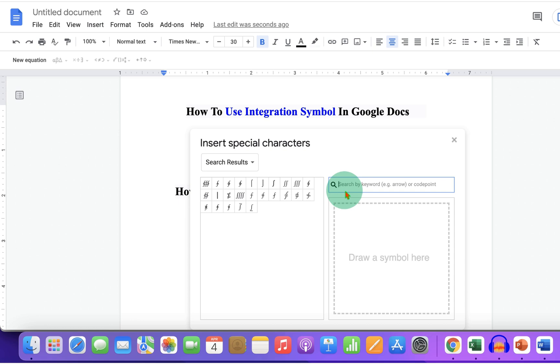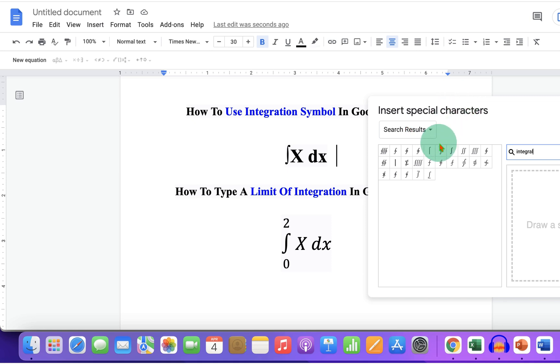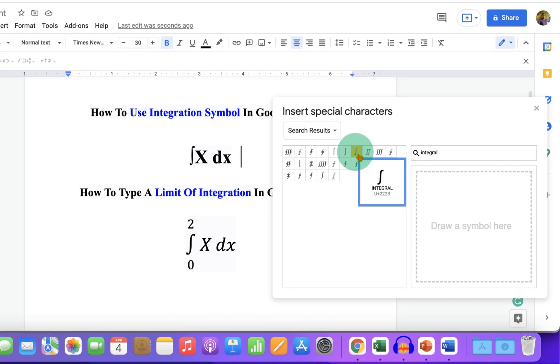Now in the search by keyword, type integral and you will see many integral symbols here. You can just click on any one of them to insert it in Google Docs.